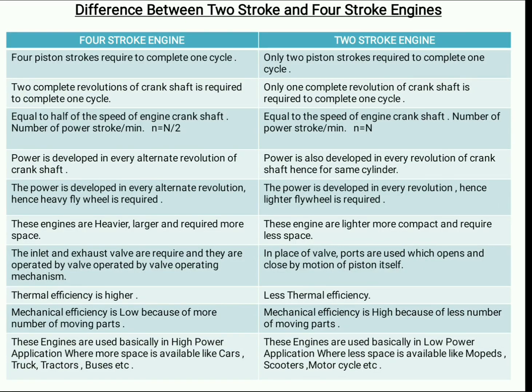In 4 stroke engines, 4 piston strokes are required to complete one cycle, whereas in 2 stroke engines, 2 piston strokes are required to complete one thermodynamic cycle. One cycle means suction, compression, power, and exhaust. So in 4 stroke engines, 4 displacements of the piston are required, whereas in 2 stroke engines, 2 piston displacements are required to complete one cycle.